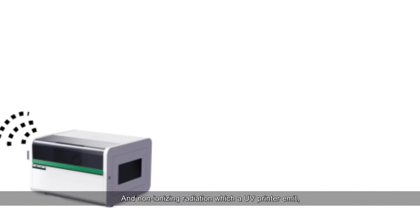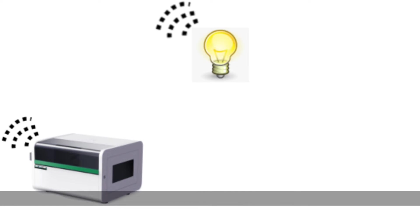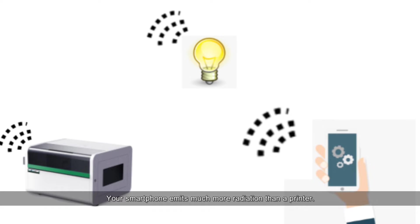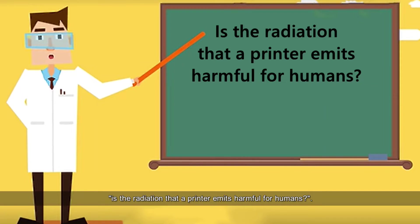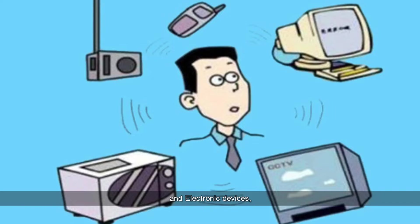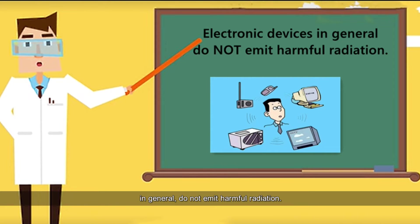The non-ionizing radiation which a UV printer emits also comes from lamps. Your smartphone emits much more radiation than a printer. So the question really should be, is the radiation that a printer emits harmful for humans? To which the answer is no. Electronic devices in general do not emit harmful radiation.